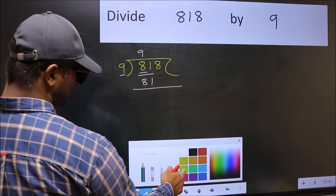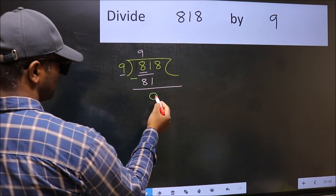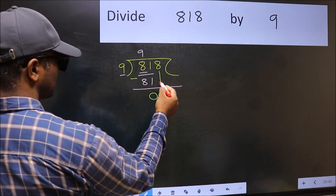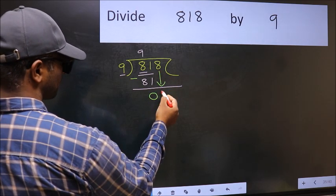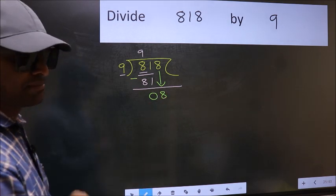Now we should subtract. 81 minus 81, 0. After this, bring down the beside number. So 8 down. After this step, the mistake happens.